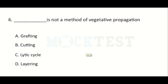Which of the following is NOT a method of vegetative propagation? Option A: Grafting, Option B: Cutting, Option C: Lytic cycle, Option D: Layering. The answer is Option C — Lytic cycle — which is not a method of vegetative propagation.